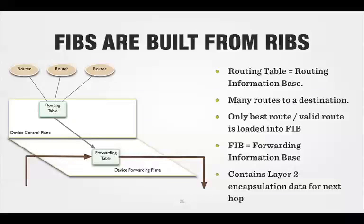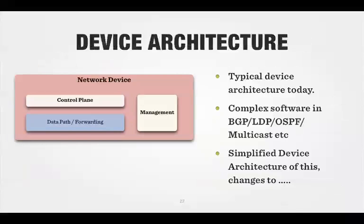Just to recap: a routing table is your routing information base. There are many routes for a destination in a RIB, but we only select the best route and load that one route into the FIB. The FIB typically contains not only the input port and the output port, but often the layer 2 encapsulation data for the next hop. So FIBs are built from RIBs in today's networking — in tomorrow's networking, it'll be different.